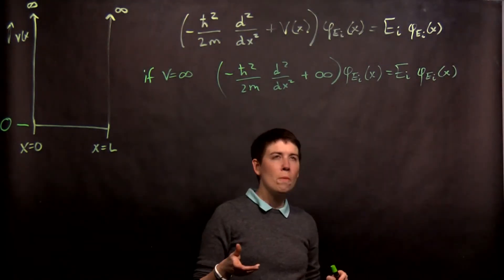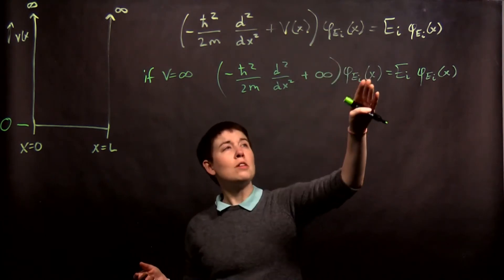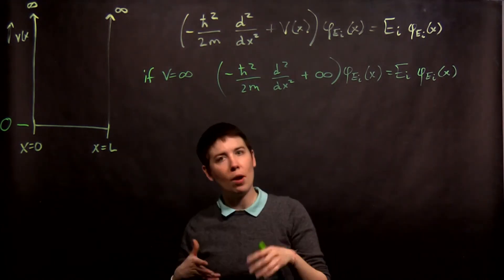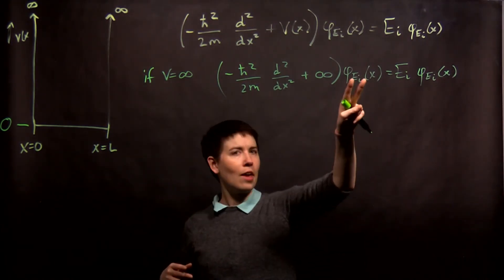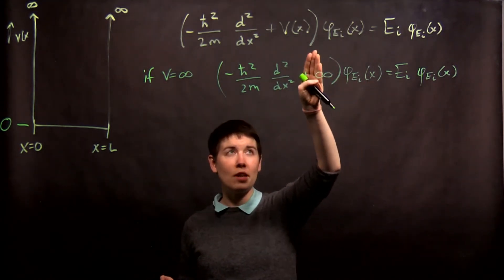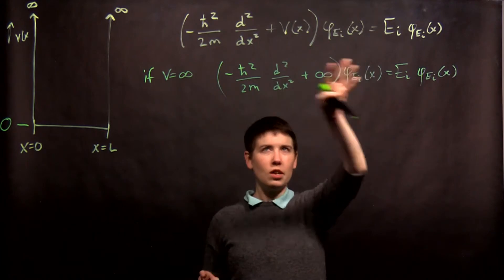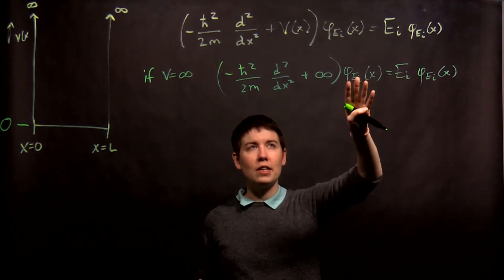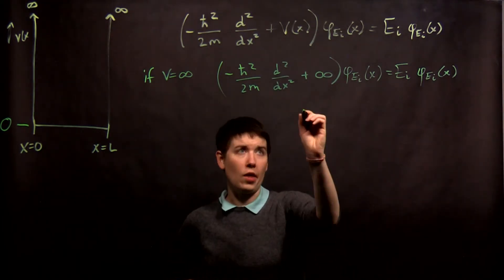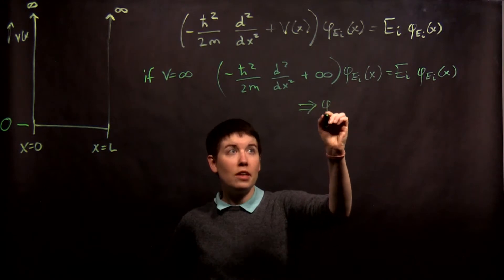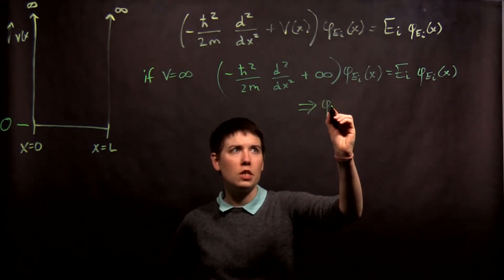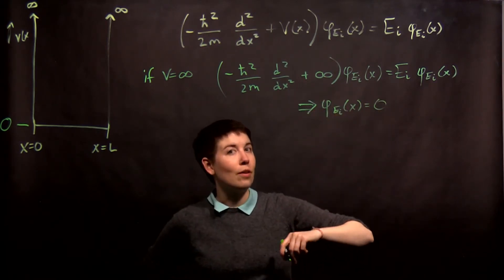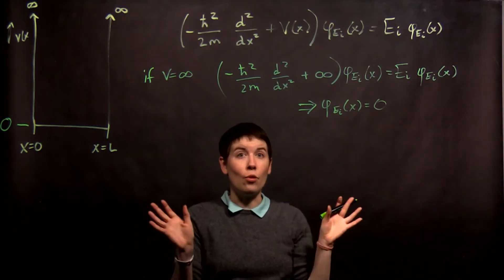So here's the thing. We're taking infinity, we're multiplying it by something that has to be normalized because we have to say that our particle has a probability of 1 being found somewhere. So we're saying infinity times something equals a thing. Finite times infinite. The only way that that will work is if where our potential is equal to infinity, our wavefunction is equal to zero, because infinity times zero is zero. And if this side is zero, then the whole thing works.